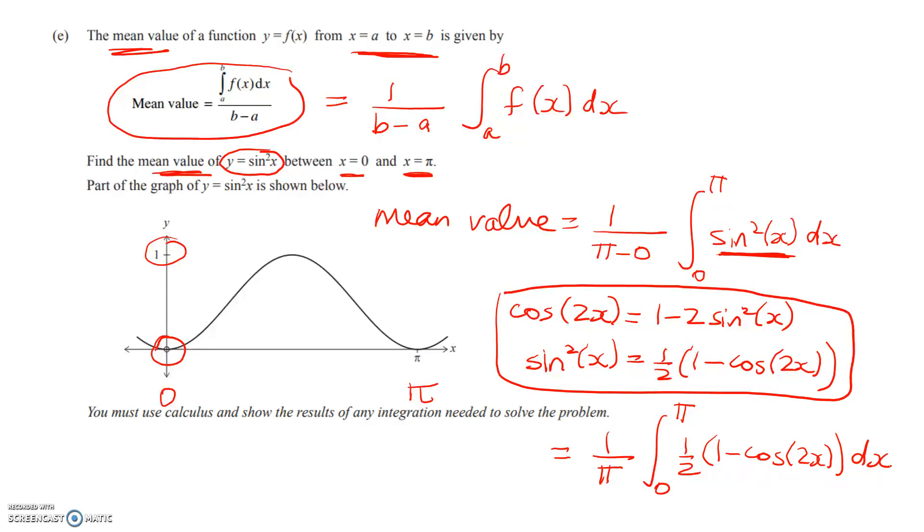I'll keep going with that on the next slide. But you probably will want to pause and finish the question off from here. So I'm going to pull that 1 half through the integral, and I get 1 over 2 pi times this integral, 1 minus sin 2x dx.